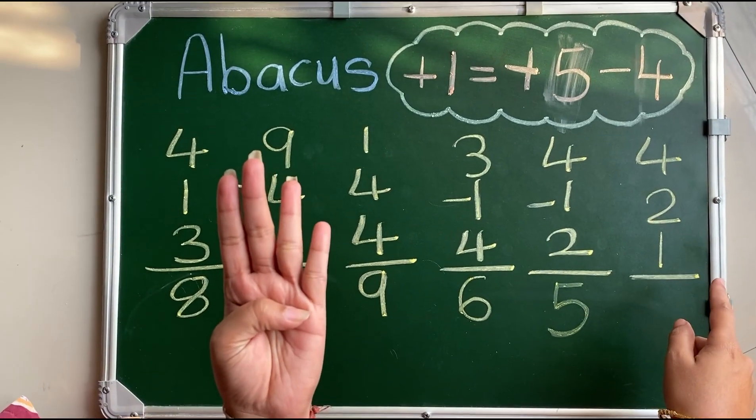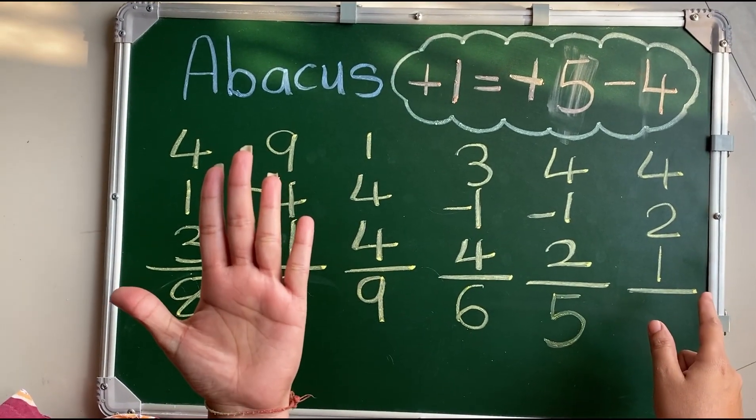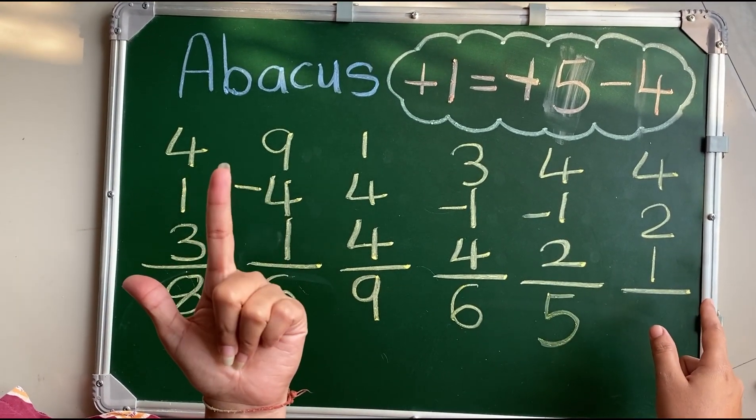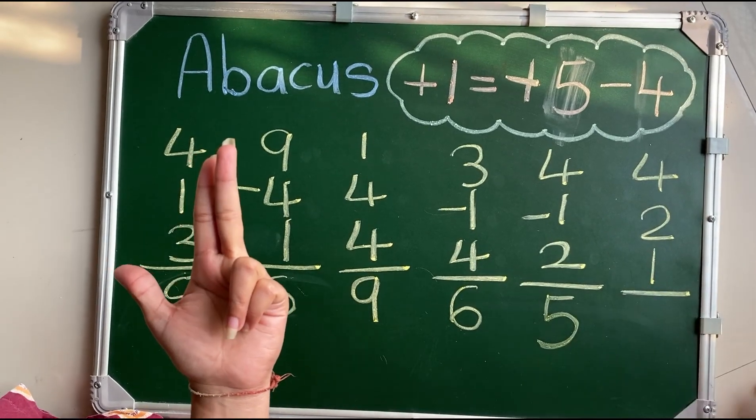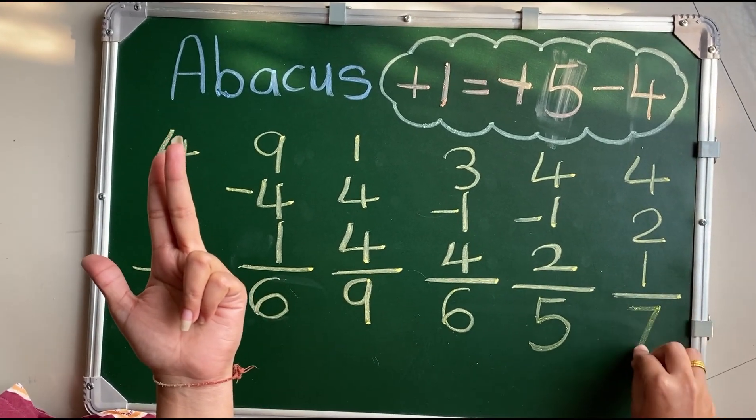4 plus 2. For plus 2 what we will do? Plus 2 plus 5 minus 3 plus 1. Answer is 7.